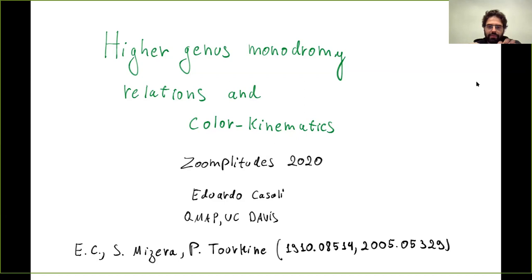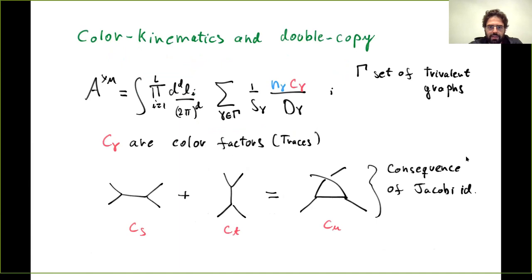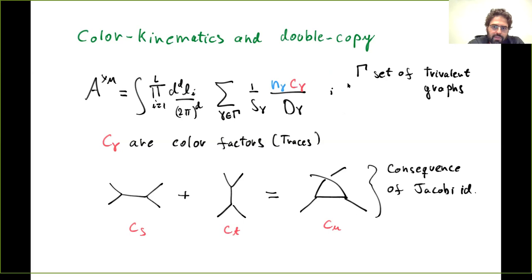If you're interested in exactly how everything combines — factors of pi, i and a half — you can go look at the paper. So you're already well-versed on color-kinematics, but just to set up some notation: if you take a Yang-Mills amplitude and write it in terms of trivalent graphs, after some work you can write it in a form where you have just a sum of trivalent graphs, with propagators, numerical numerators, and color factors C_gamma.